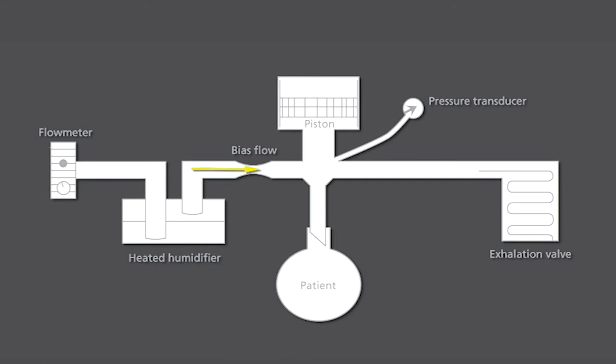The gas then continues through the circuit to the patient and then out through the exhalation valve. The variable restriction to the outflow of gas generates mean airway pressure while the piston superimposes the ventilatory process.